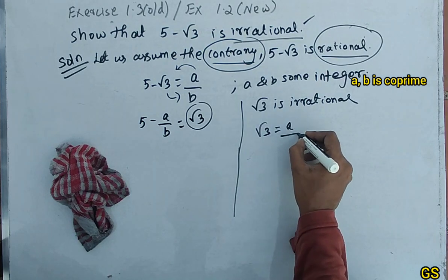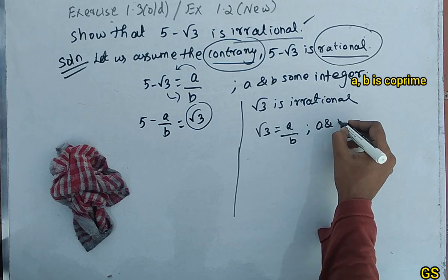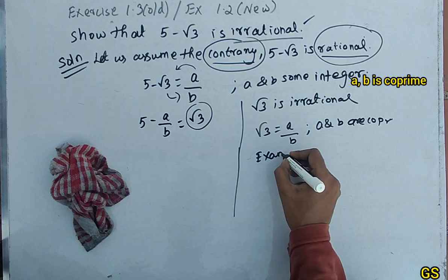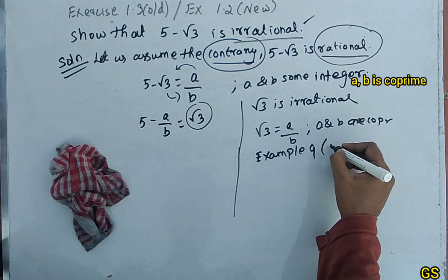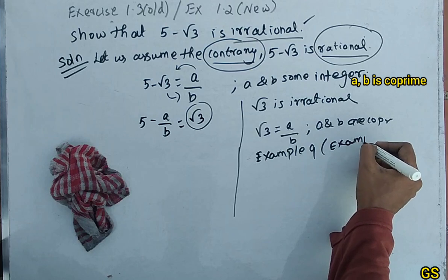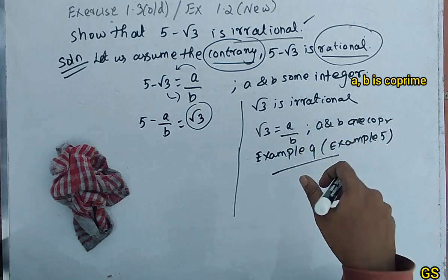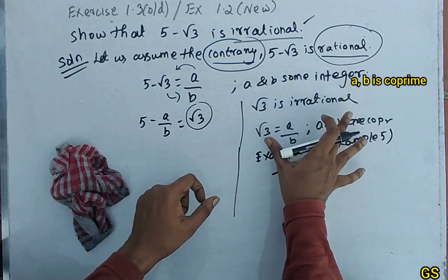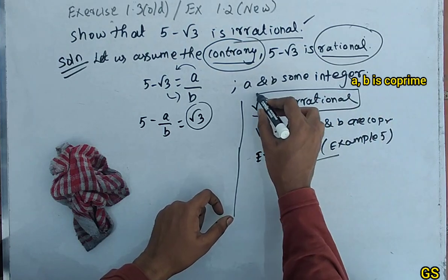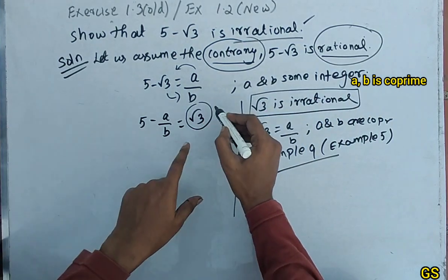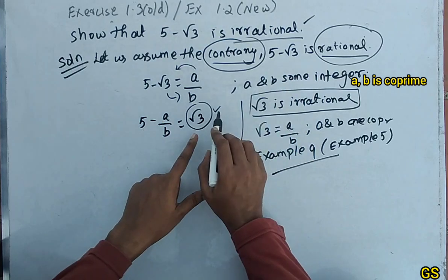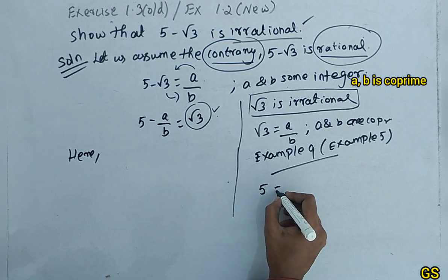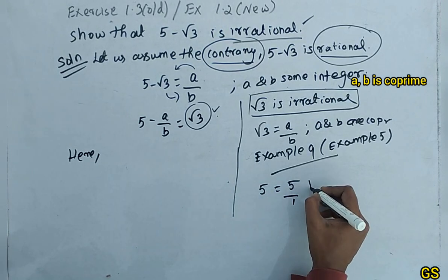Root 3 is irrational — this is the proof where √3 equals a/b and a and b are co-prime. Root 3 is irrational, as proven. Now here you can see: 5 is a rational number — 5 by 1 is rational — so 5 is rational.